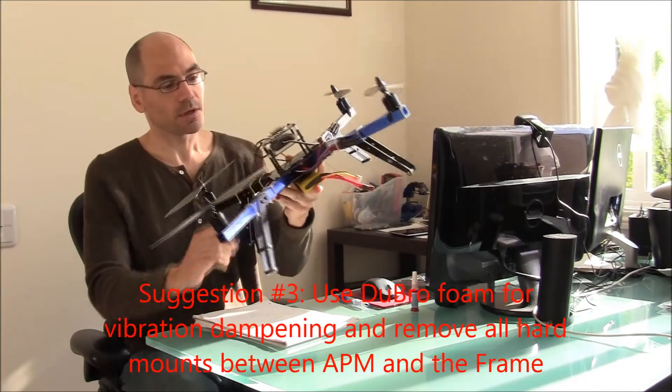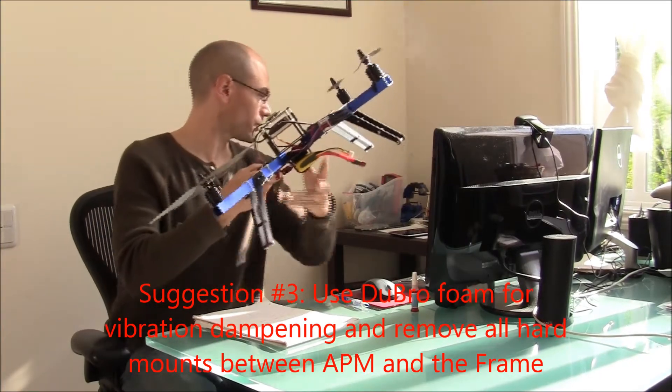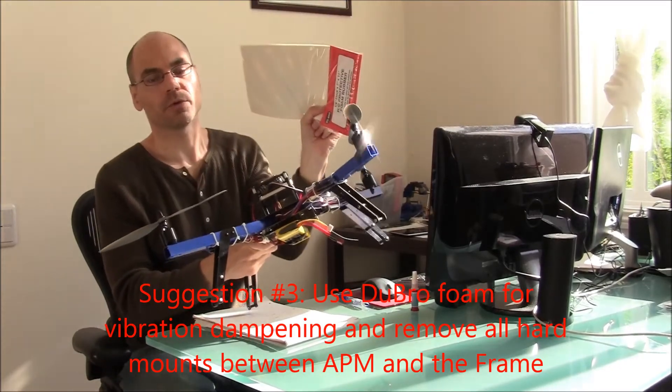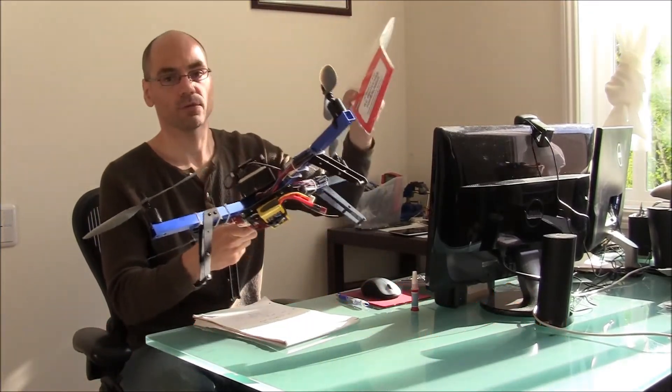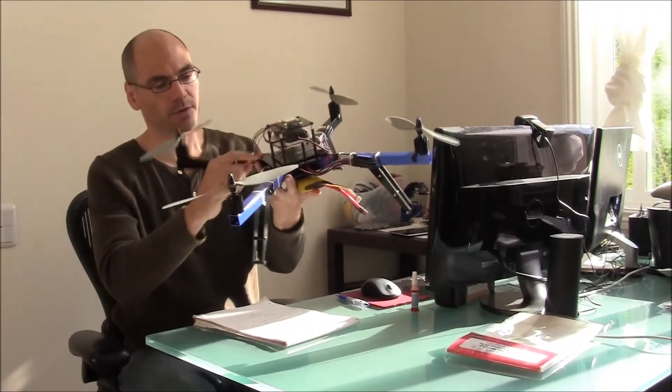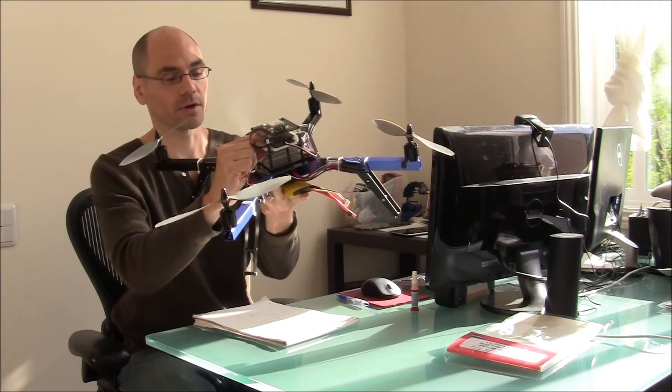The other thing is vibration dampening. So what I do is I use this Dubrow foam, which personally I think is the best for vibration damping, and I put that onto the second level. And I just glue it there with crazy glue, and then I actually just glue the APM right on top of it.